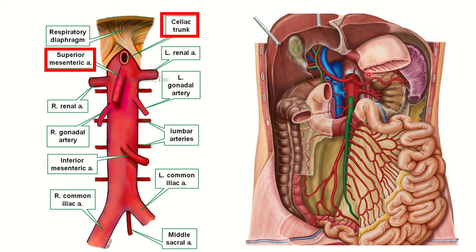Let's look at the celiac axis, also called the celiac trunk or celiac artery. Here we can see the celiac trunk, and just below it there is another artery — this is the superior mesenteric artery. Just one centimeter below the celiac axis, we have the superior mesenteric artery. Below that, we can also see the inferior mesenteric artery.